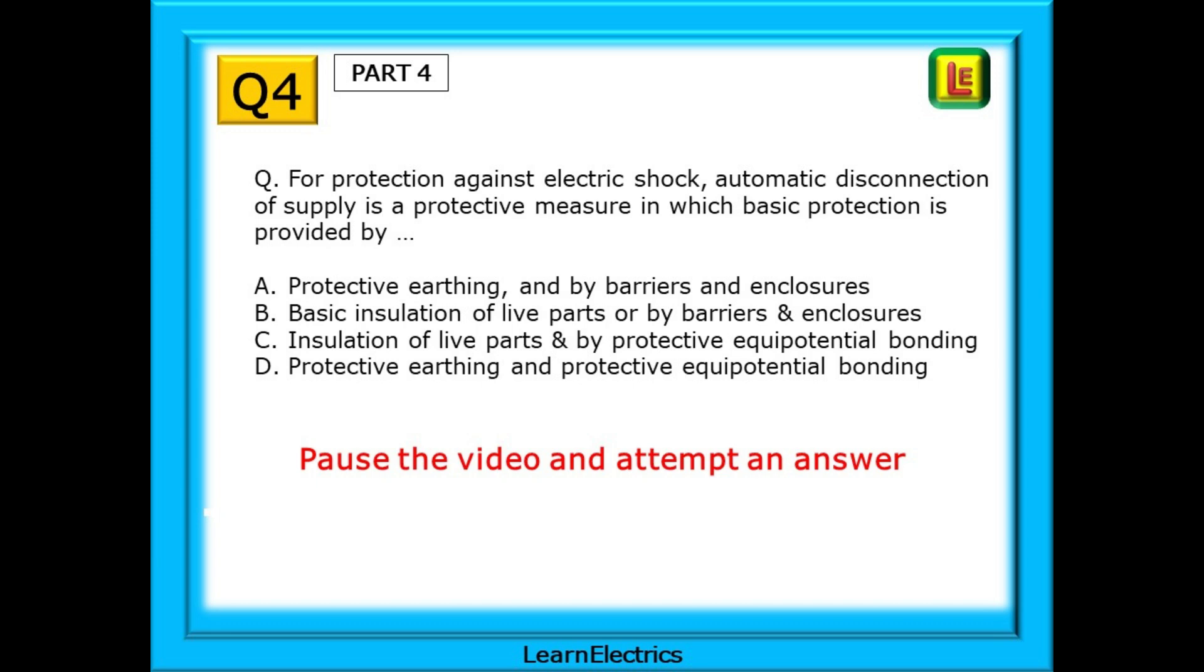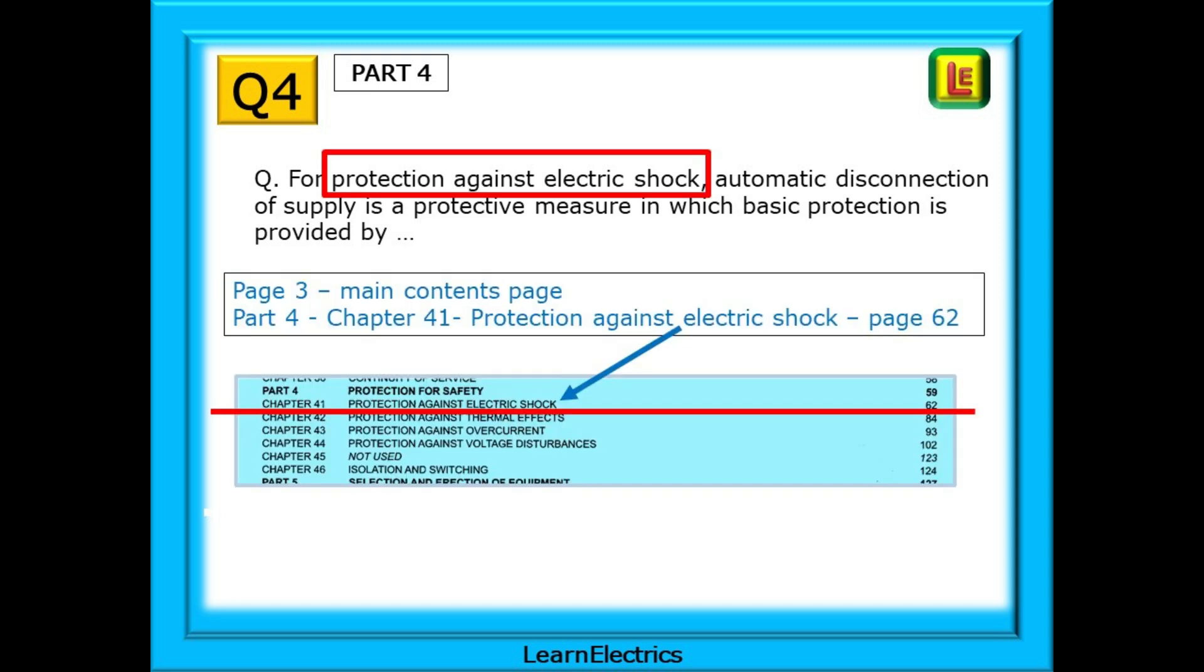Question 4 is next. The question asks for protection against electric shock automatic disconnection of supply is a protective measure in which basic protection is provided by what? The keywords here are protection against electric shock.